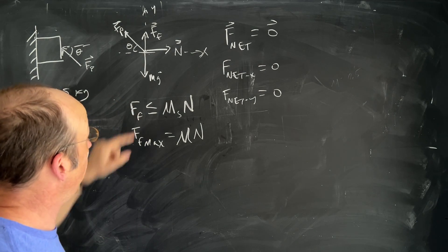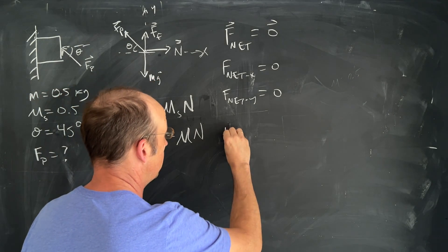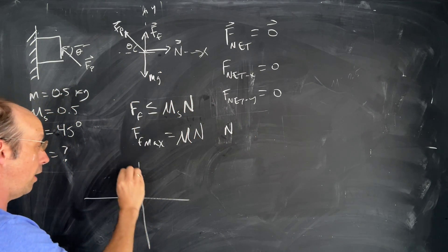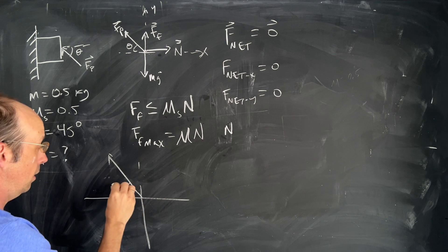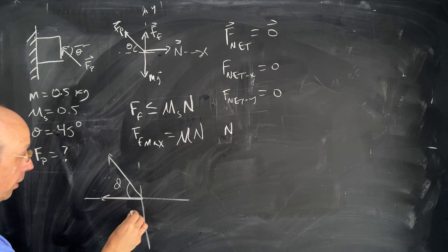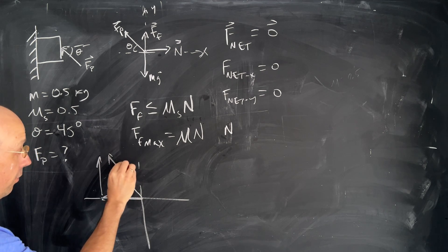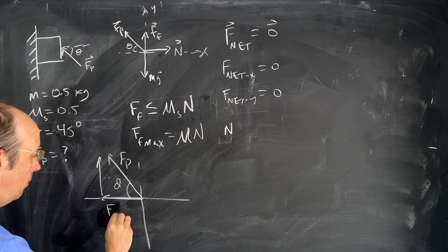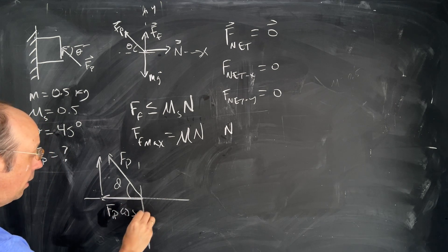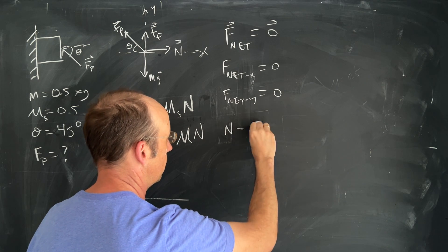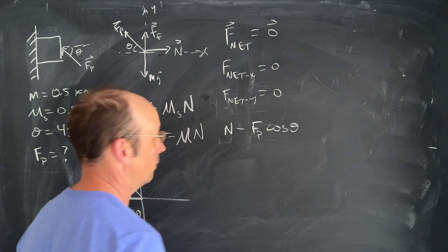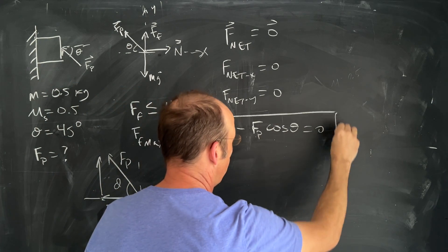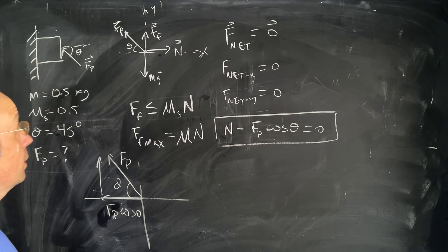So let's write down the net force in the x direction first. So in the x direction what do I have? Well I have the normal force so I have n and then I have a part of this pushing force so let me draw that right here and that's theta so this is my x component and this would be my y component. So if this is fp this is going to be fp cosine theta in the negative direction and that would be equal to zero. So that's my x equation, the net forces in the x direction.